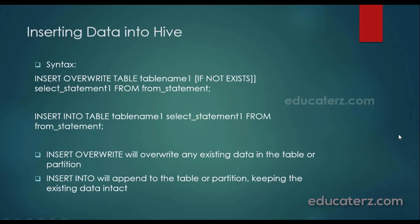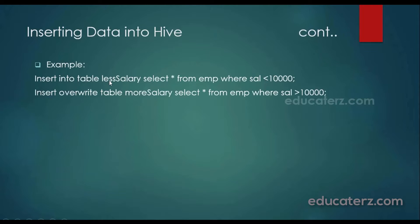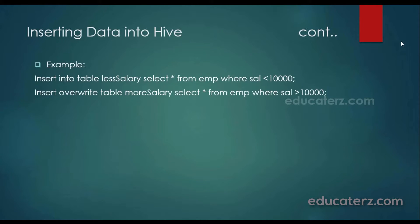Let me show you how to load data from one table to another. Before loading, we must create a table first. What I want to do is: from the employee table we created earlier, load the data into two separate tables — whoever is getting less than 10,000 salary goes into one table, and whoever is earning more than 10,000 goes into a separate table. To achieve this with separate INSERT statements, and also Hive has something called multi-table inserts which is not available in standard SQL.